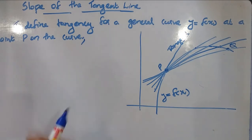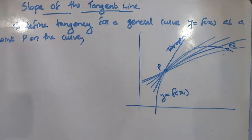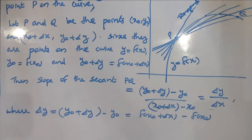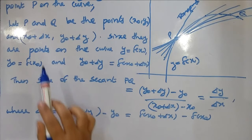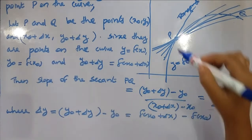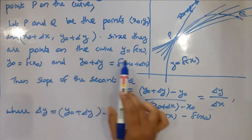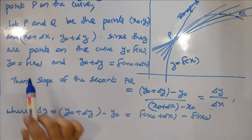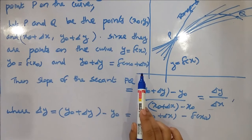We can write coordinates in the picture: P is (x₀, y₀) and Q is (x₀ + Δx, y₀ + Δy). Since both are points on the curve y = f(x), we have y₀ = f(x₀) and y₀ + Δy = f(x₀ + Δx).